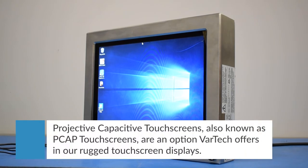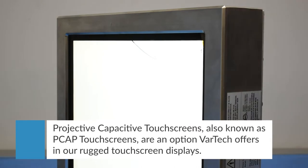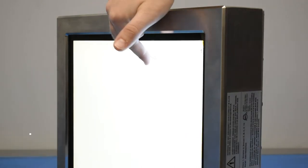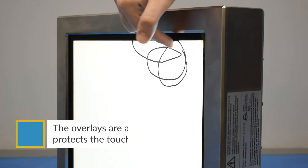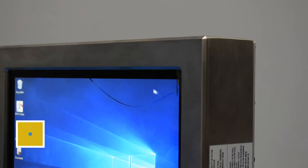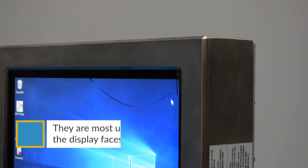Projective capacitive touchscreens, also known as PCAP touchscreens, are an option VARTEK offers in our rugged touchscreen displays. The overlays are an additional layer of glass that protects the touchscreen from impact. They are most useful for rugged applications where the display faces a high risk of impact damage.